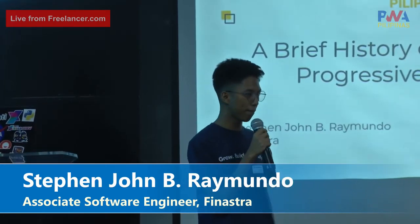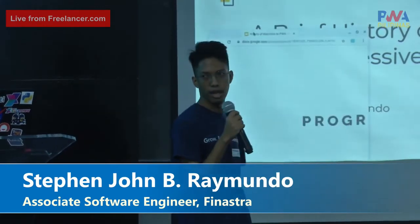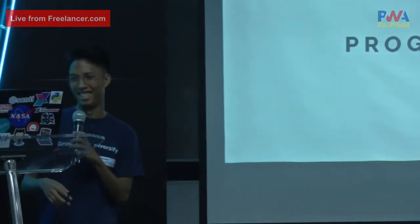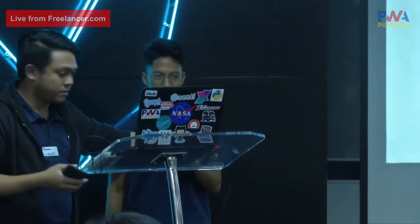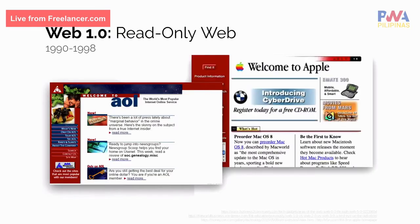I'm going to share a brief history of the web and progressive web apps. The web that we see today is very different from what it was before. The web itself is very progressive. In the early 90s, the web was considered read-only or static, where it offered content similarly to what you see on product ads, brochures, and newspapers. It wasn't really interactive at that time.